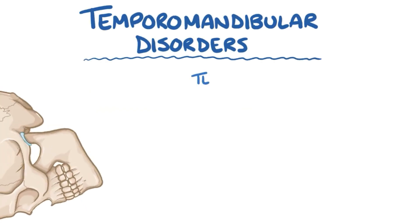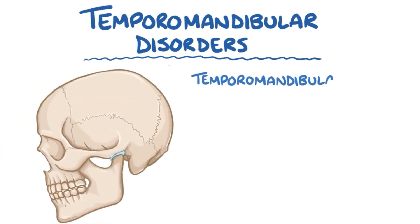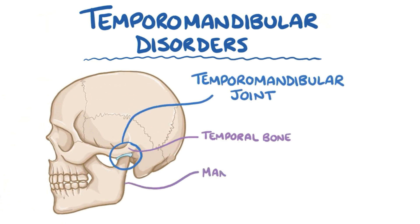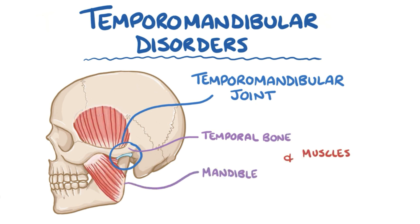Temporomandibular disorders are a group of disorders that all involve the temporomandibular joint, which is located between the temporal bone of the skull and the mandible, or jawbone, as well as the muscles and associated structures that are involved in chewing and speech.